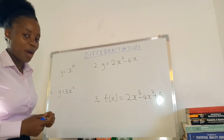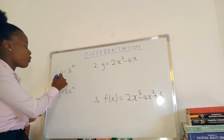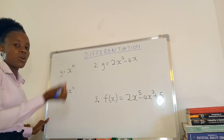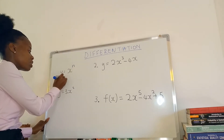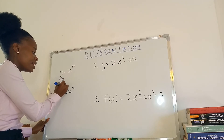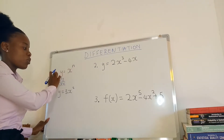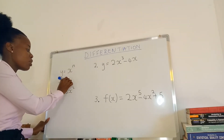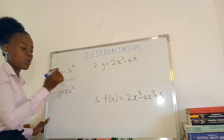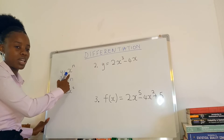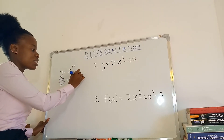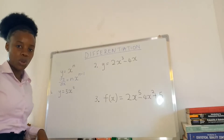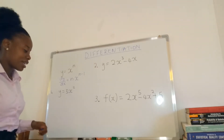I'm going to show you how to differentiate. If you have y equals x to the power n, when you differentiate you write dy over dx to show that you are differentiating y with respect to x. The first step: you drop the power, and then you subtract one from the power.